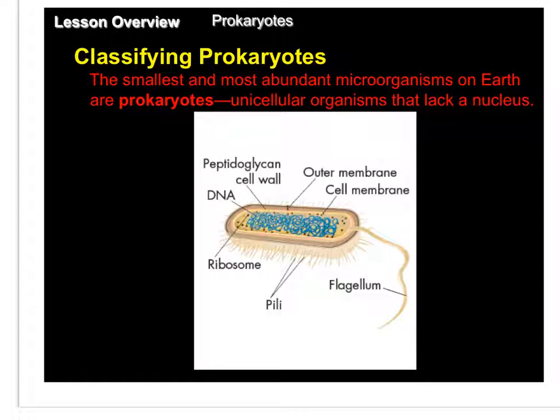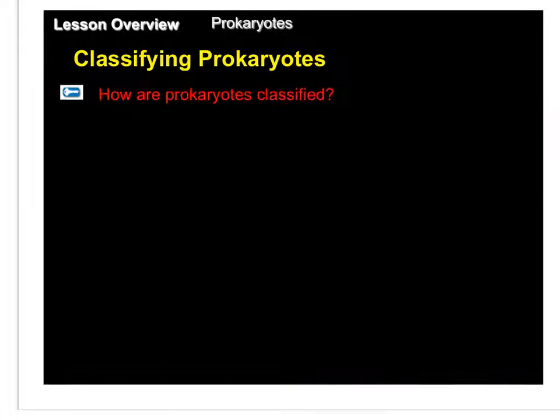Prokaryotes are unicellular organisms, meaning they're single-celled organisms. They're the smallest organisms on Earth, and they are also the most abundant organisms on Earth. The big thing that makes them different from all other living organisms is the fact that they lack a nucleus. Let's go a little deeper into the classification of prokaryotes.